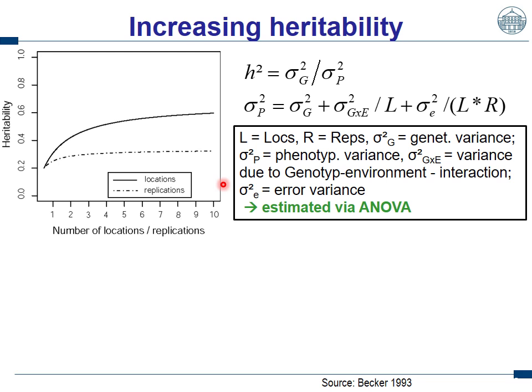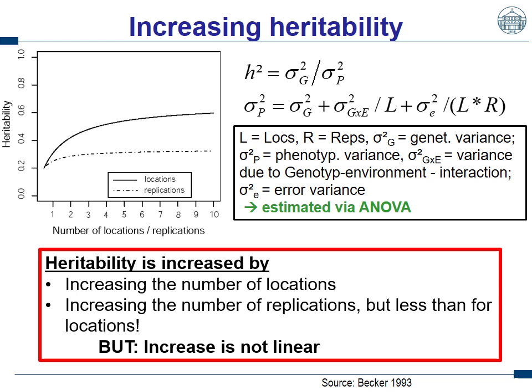Thus, assuming that a replication costs as much money as a test location — which is often the case when a breeding company has a network of field locations — another location doesn't cost more than the home location. In this scenario, it is always more worthwhile to invest in number of locations than in number of replications. The second thing, like seen in selection intensity, is that heritability does not linearly increase with the number of test locations. At the beginning it increases tremendously, while it rapidly flattens. The increase in heritability is not linear to the number of increased locations or replications.